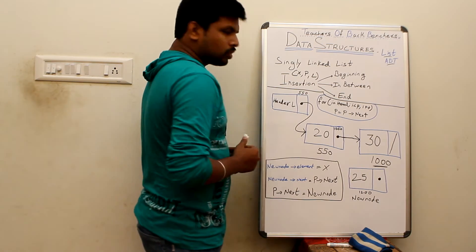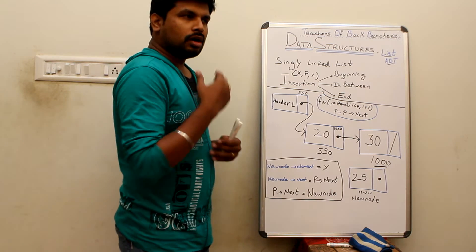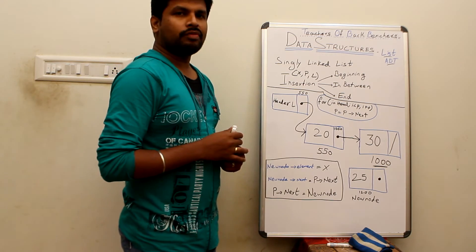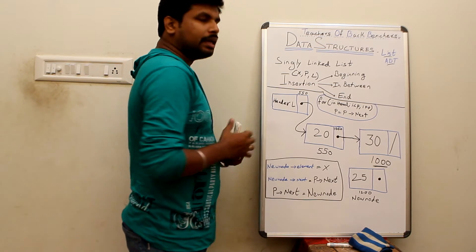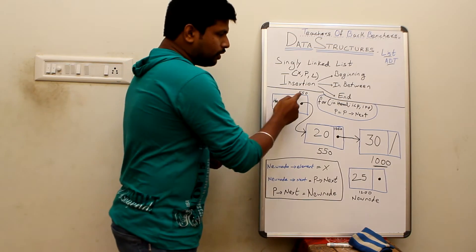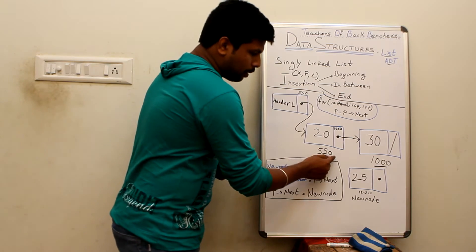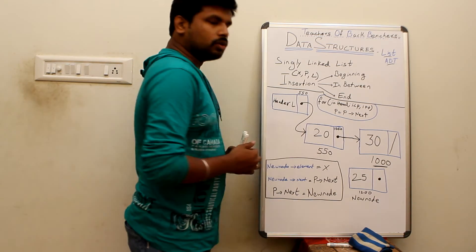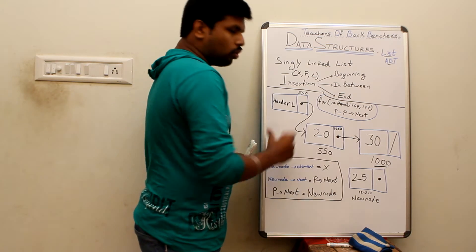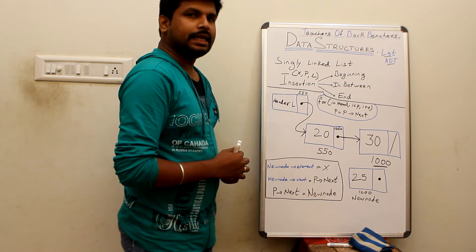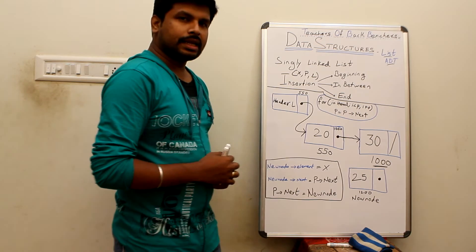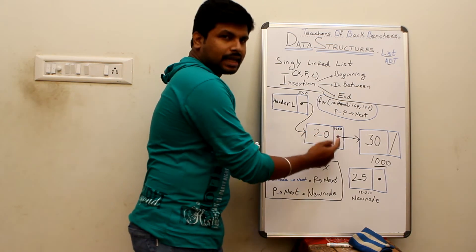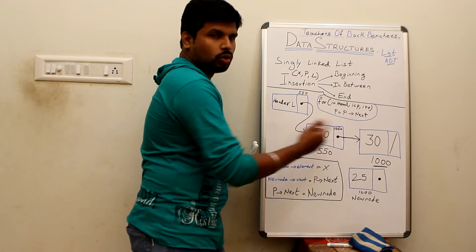The head label holds the address of the first node, which is 550. So if you want to traverse the entire list, you look at the head label which gives you the first memory address 550. In a singly linked list, each node consists of two segments: the first is the value and the second is the address of the next node.